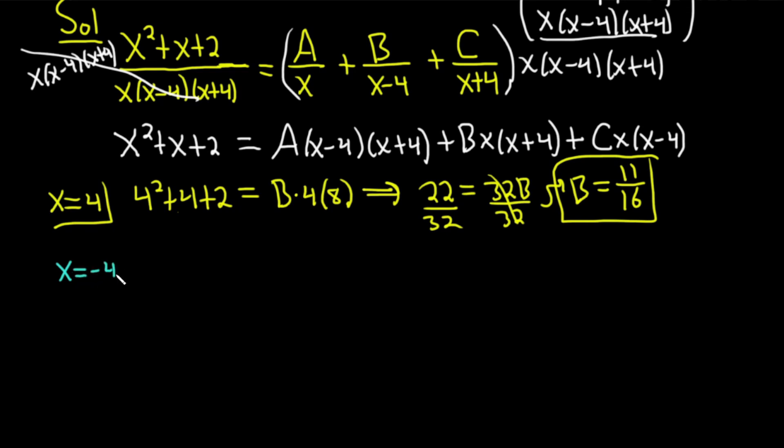So x equals negative 4. Plugging in negative 4, I pick negative 4 because it'll make the B go away. It'll make the B go away because we have negative 4 plus 4 when I put an x there. So we have negative 4 squared. And then x is negative 4, so minus 4 plus 2 equals. The A will also go away because it has an x plus 4 term. And so negative 4 plus 4 is 0. So that's gone. The A is gone. The B is gone. The only thing that's left is the C. So we have negative 4 and then negative 4 minus 4.